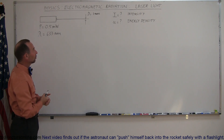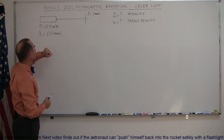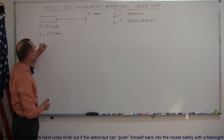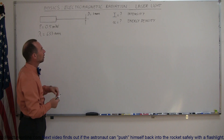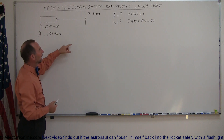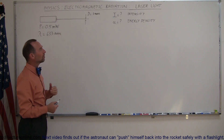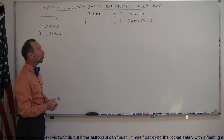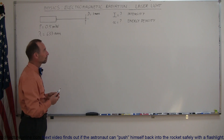If they ask us: given that the power of the laser is 0.5 milliwatts, the wavelength is 633 nanometers (typical red laser), and the beam diameter is 1 millimeter — what is the intensity of the beam, and what is the energy density within the beam of this laser?